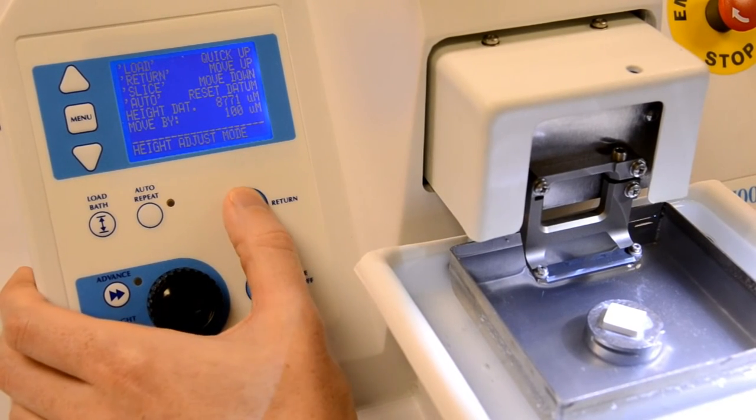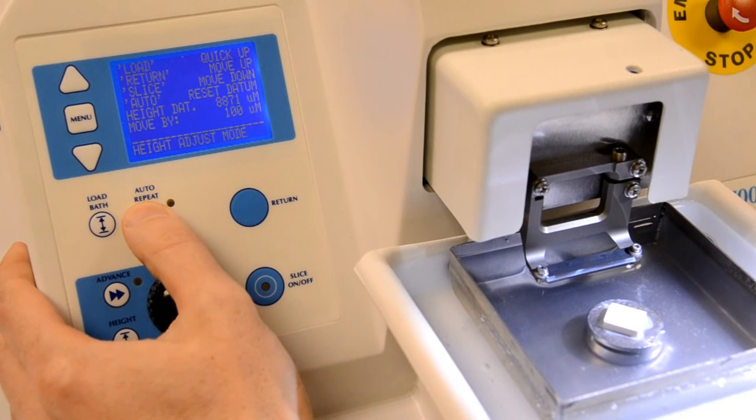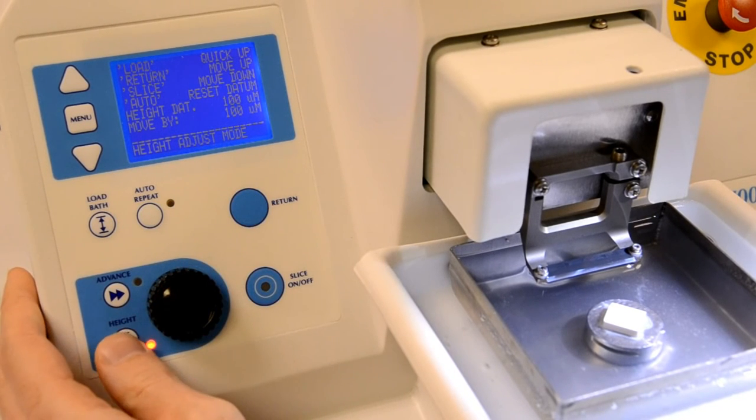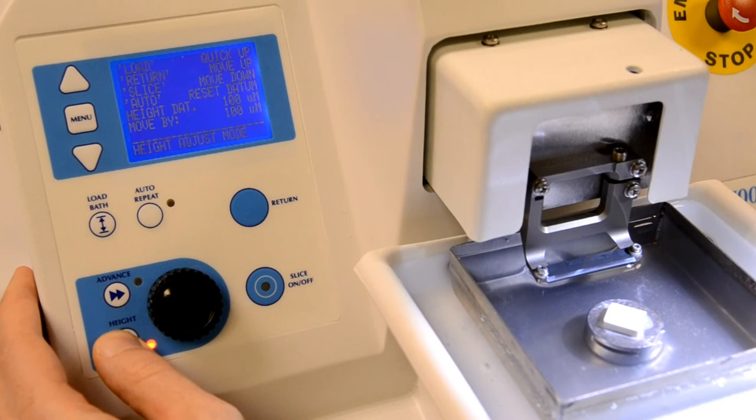Once you have brought the specimen to a suitable height, press the auto-repeat key to reset the height datum to zero and use the rotary knob once again to set the desired slice thickness. Press the height key to exit the height adjustment mode.